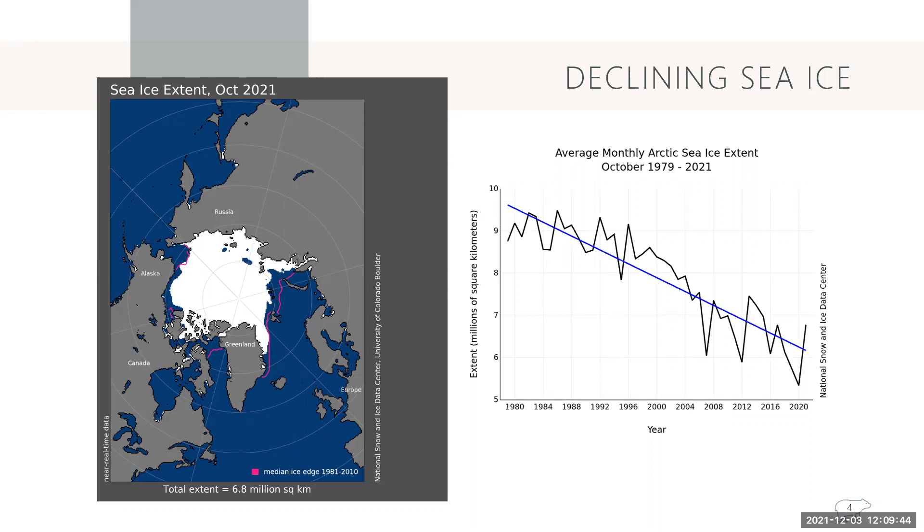So the black line are data representation of the extent shown on the map on the left. And then the blue line represents a nine point eight percent per decade decline, which is equivalent to an area twice the size of Alaska. So every 10 years we're losing two Alaska's worth of sea ice. And understanding how sea ice gets to this minimum value each year is important in order to predict the future of the ice cover.